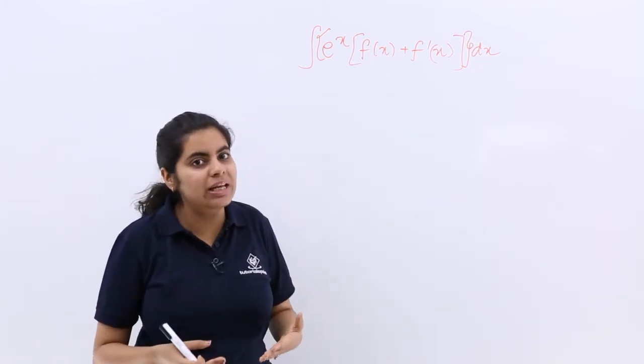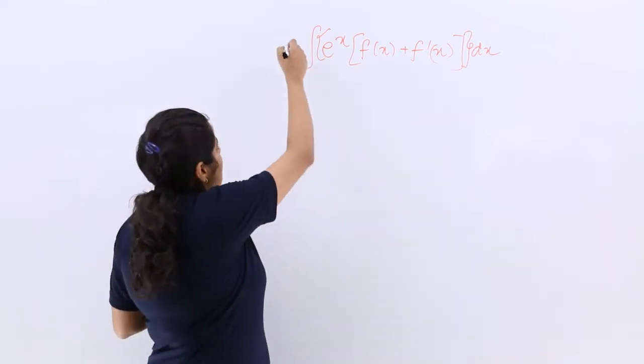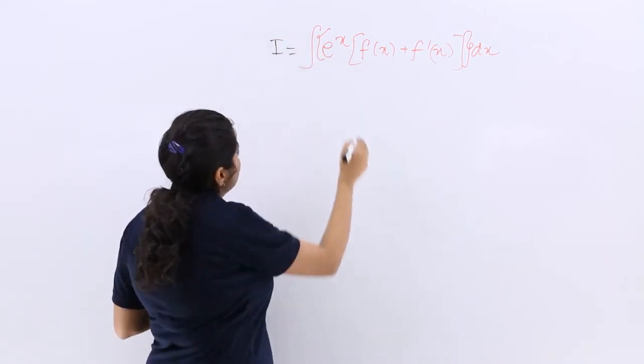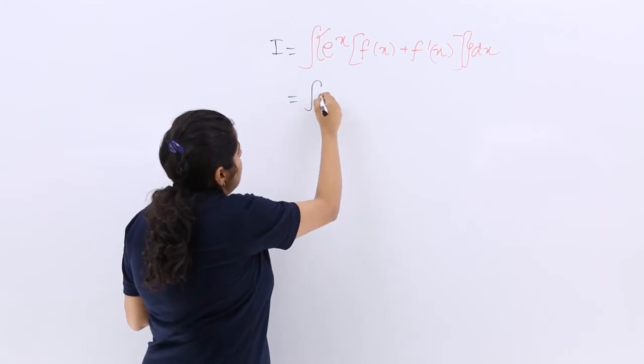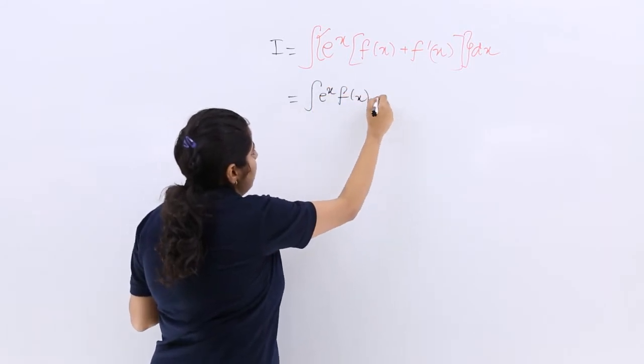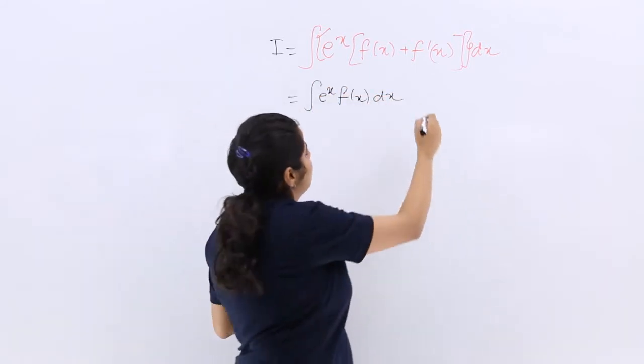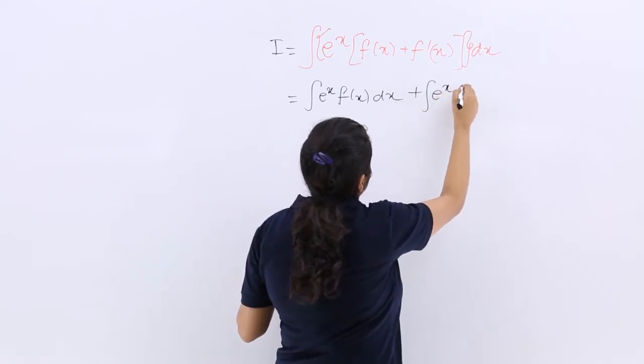What would its value be? So if I write I here, I know that this is separable. I can separate it with respect to x. Here also I can separate with respect to x.